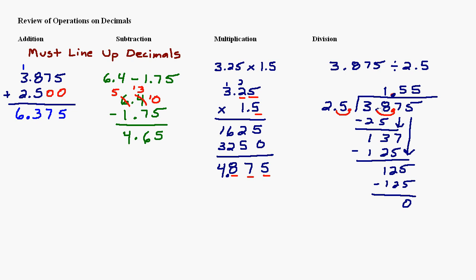And again you can check by estimating: how many times will 2.5 go into 3.875? It'll go in once, but not twice, because two 2.5s would make 5. So the answer of 1.55 makes sense.